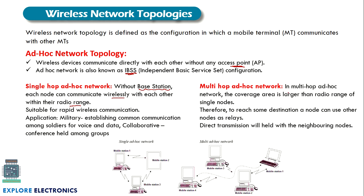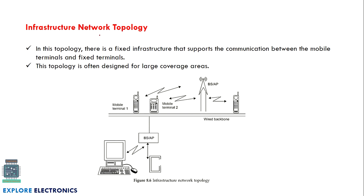In a multi-hop ad hoc network, the coverage area is larger compared to single-hop. To reach person B who is far away, intermediate nodes are used. For example, mobile station 1 and mobile station 4 communicate through mobile station 2 and mobile station 3 — the message is passed from one node to the next. This is called a multi-hop ad hoc network, where direct transmission is held through neighboring nodes.